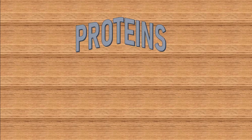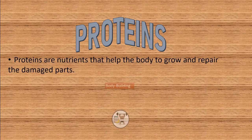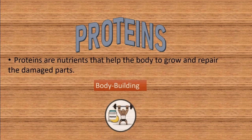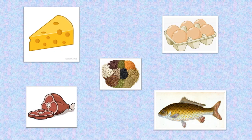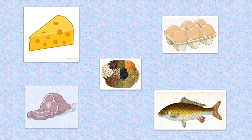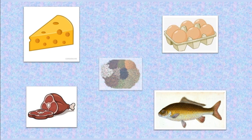Next is proteins. Proteins are nutrients that help the body to grow and repair damaged parts; hence proteins are known as body-building food. The food items that are rich in proteins are milk, milk products, cheese, egg, meat, fish and pulses. Young children need more protein-rich food than adults because they are still growing.